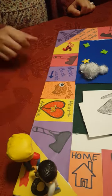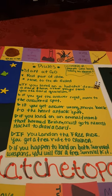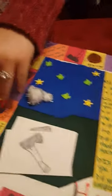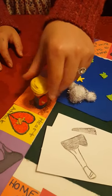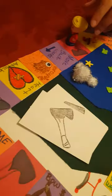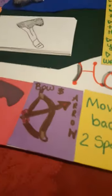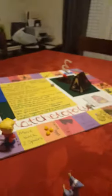Now, if you land on an animal or insect that harmed Brian in the story, you must go to the nearest hatchet to draw a card. So if I land on a porcupine, I have to go to the nearest hatchet, which is right here, and draw a card. The partner will ask: What did Brian use to hunt animals? He used a bow and arrow. If that's correct, you go to the bow and arrows on the other side — so now you're closer to home.